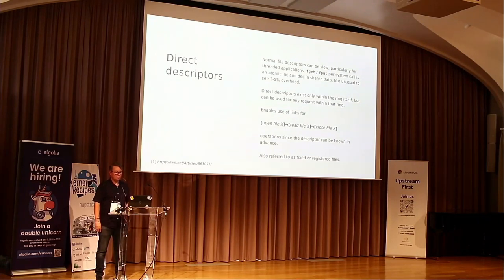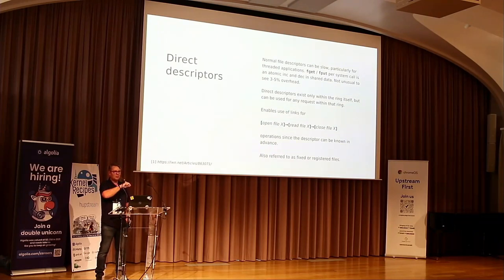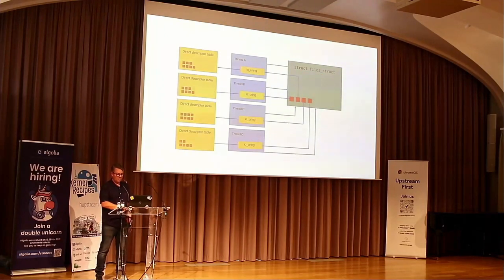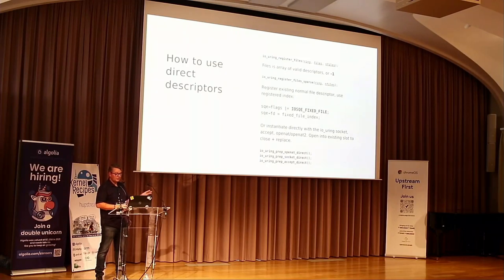Because the application picks the file descriptor itself, you can also use files in link sequences — where io_uring lets you submit dependent requests. For example: open file X, read from file X, close file X, and don't notify until the whole thing is done. That's a single submission for all those operations. With direct descriptors you know ahead of time what FD you'll get. In practice, you register an array of these, and when filling in a submission queue entry, set the fixed-file flag and fixed-file index. It works just like a file descriptor but is only valid within that specific ring.